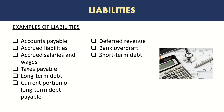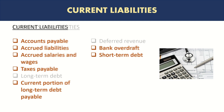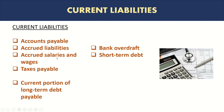The current liabilities would be all the accounts payable, accrued liabilities, accrued salaries and wages, taxes payable, usually the current portion of long-term loans, bank overdrafts, and short-term debt.